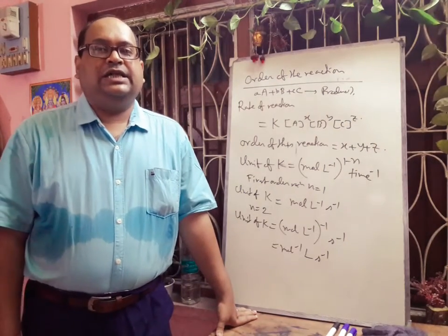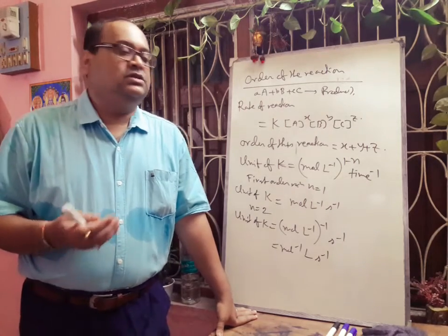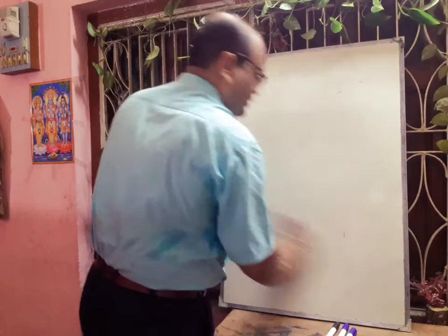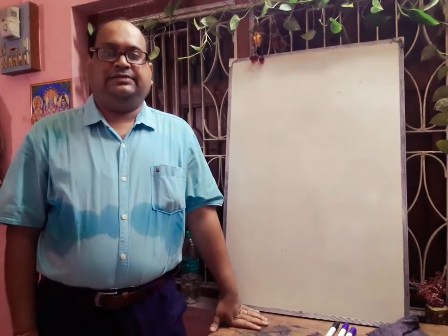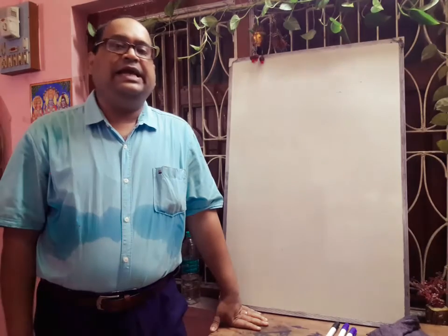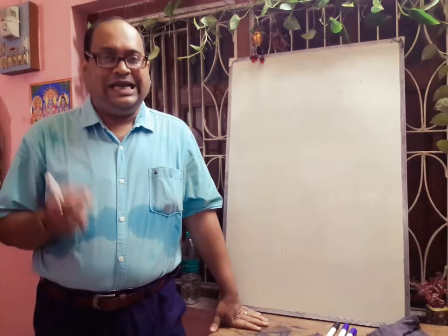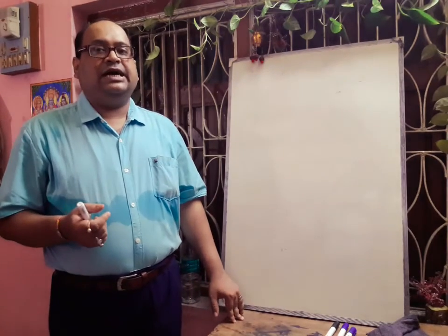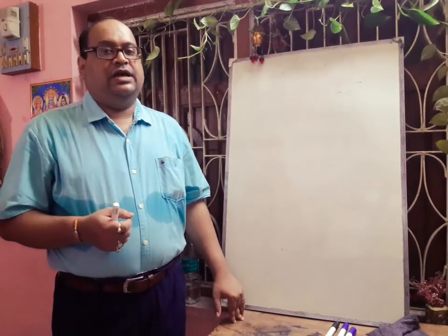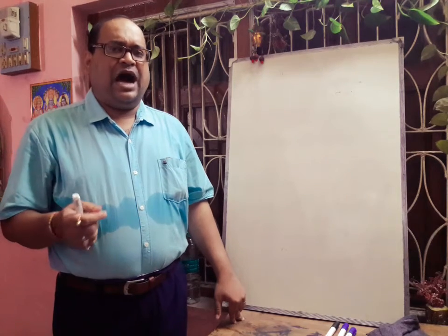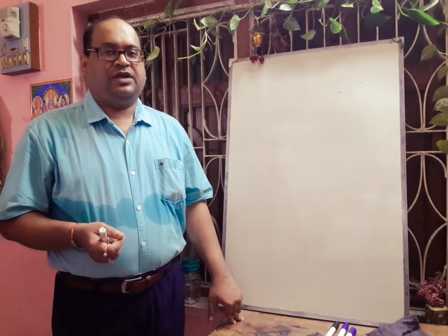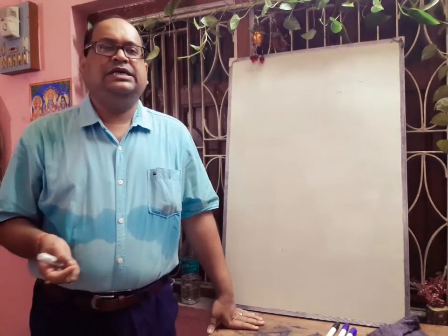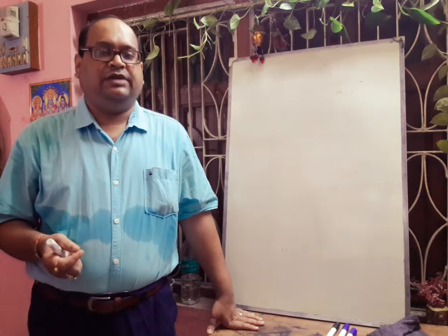Next we want to discuss how the order of a reaction can be calculated. There are different methods: first, by integrated rate law equation; second, by graphical method; third, by initial rate method; and fourth, by the half-life method. From your syllabus, only zero order and first order integrated rate equations are required.